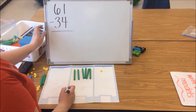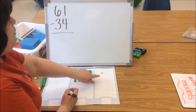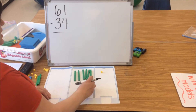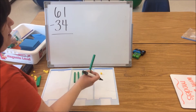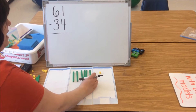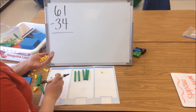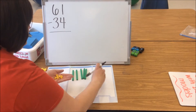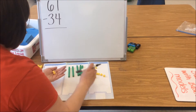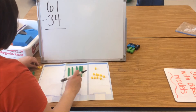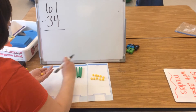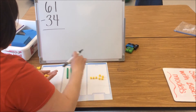We're going to look at our subtraction problem. We see we need to take away 4 ones. However, we don't have enough ones to subtract. So we're going to go over to our 10s and decompose — take apart a 10. Because students know there are 10 ones in a 10, we're going to decompose a 10 by taking it away and replacing it with 10 ones: 1, 2, 3, 4, 5, 6, 7, 8, 9, 10. Now we can take away our 4 ones: 1, 2, 3, 4.